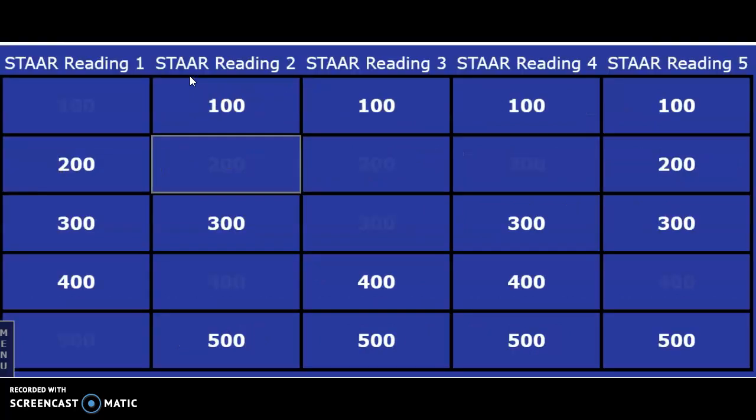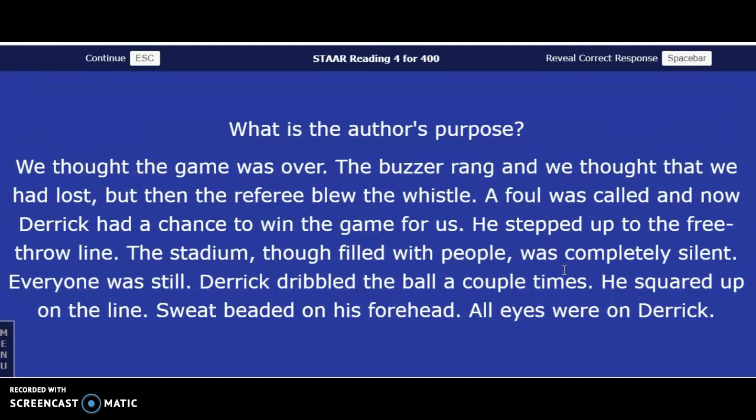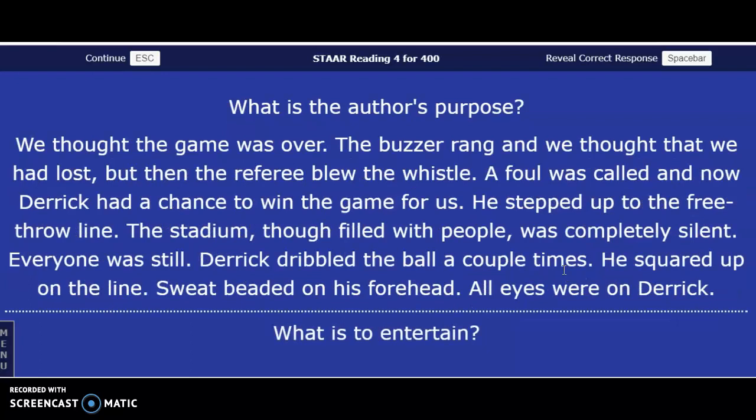What is the author's purpose? We thought the game was over, the buzzer rang and we thought that we had lost, but the referee blew the whistle — a foul was called. Now Derek had a chance to win the game. He stepped up to the free throw line. The stadium, though filled with people, was completely silent. Derek dribbled the ball a couple times, squared up on the line, sweat beaded on his forehead — all eyes were on Derek. The answer in three, two, one — to entertain. The author wrote this just to entertain you.